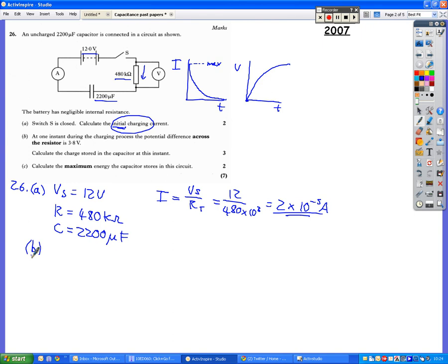Part B. At one instant during the charging process, the potential difference across the resistor, notice that is in bold, is 3.8 volts. Calculate the charge stored in the capacitor at this instant.